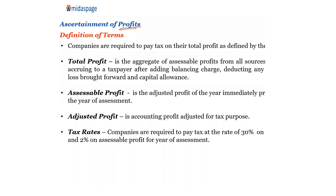Definition of terms: companies are required to pay tax on their total profits. Total profits — this is one type of profit, number one, as defined in the tax law. Companies are required to pay tax on total profits as defined by the tax law.